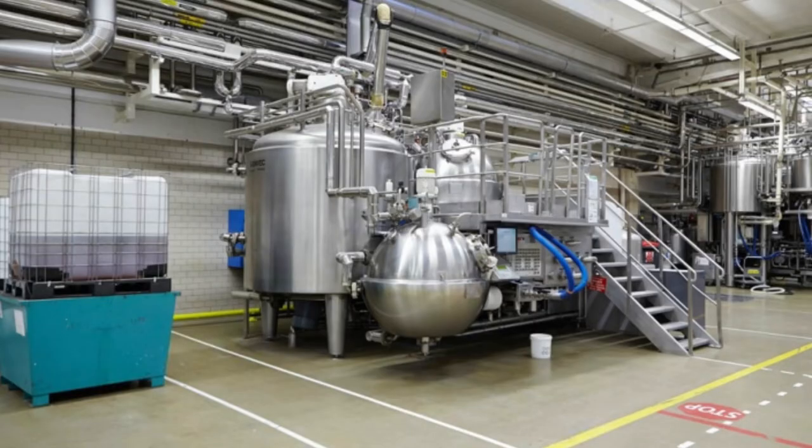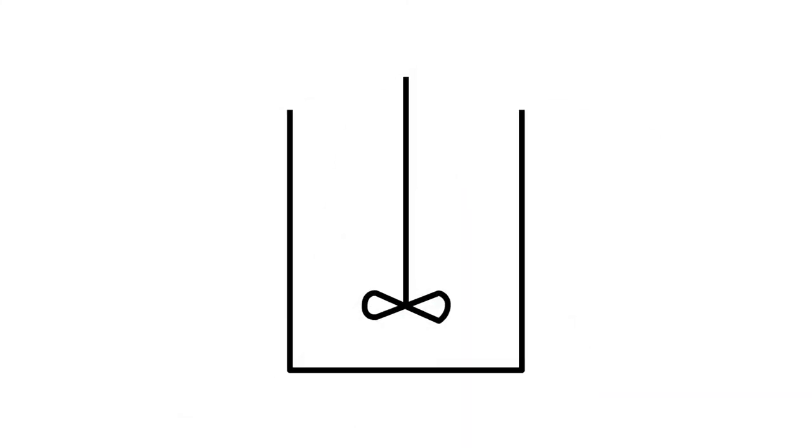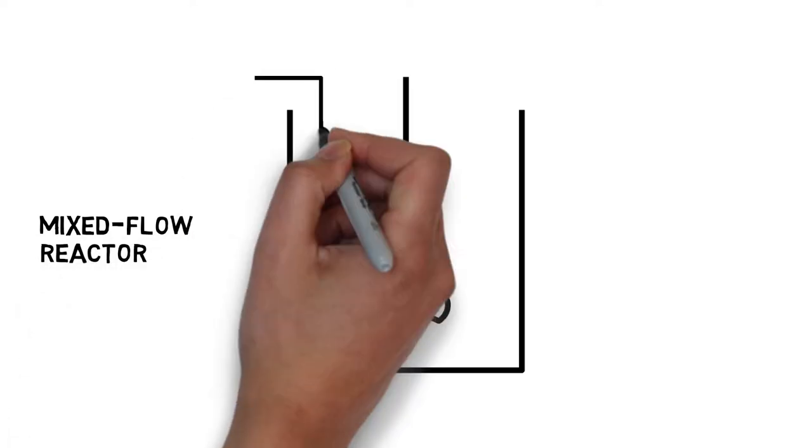They now want to produce this molecule at industrial scale using a continuous mixed flow reactor. That is a reactor which is fed continuously with a mixture of raw materials and with the continuous removal of the reaction products.